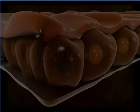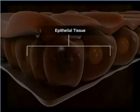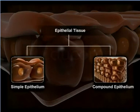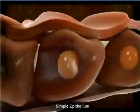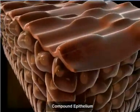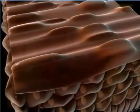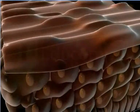Based on the number of layers present, the epithelial tissue is divided into the simple and compound epithelium. The simple epithelium is formed over a single layer of cells that rests on the basement membrane. On the other hand, the compound epithelium is composed of two or more than two layers. The compound epithelium is also known as stratified epithelium.